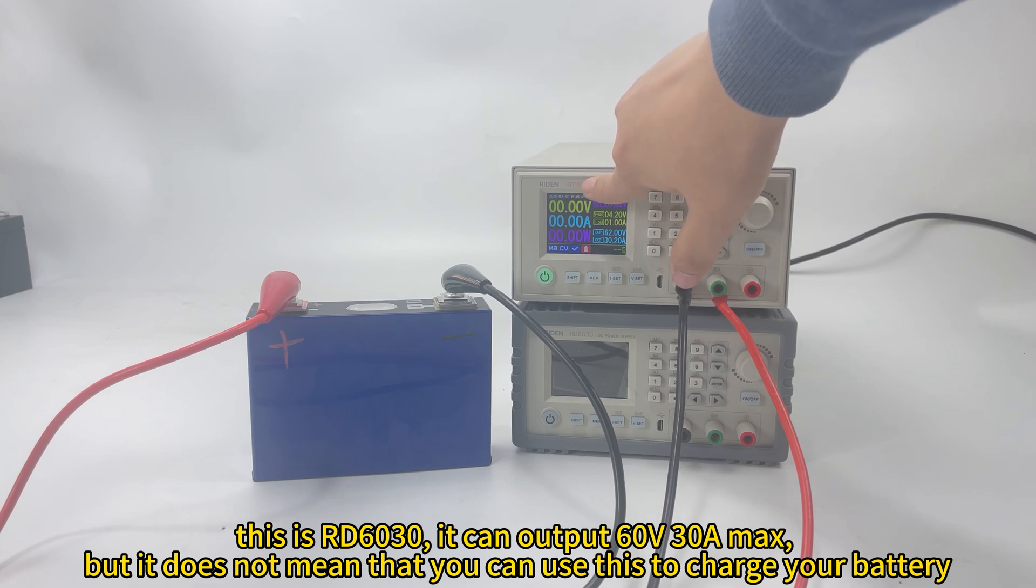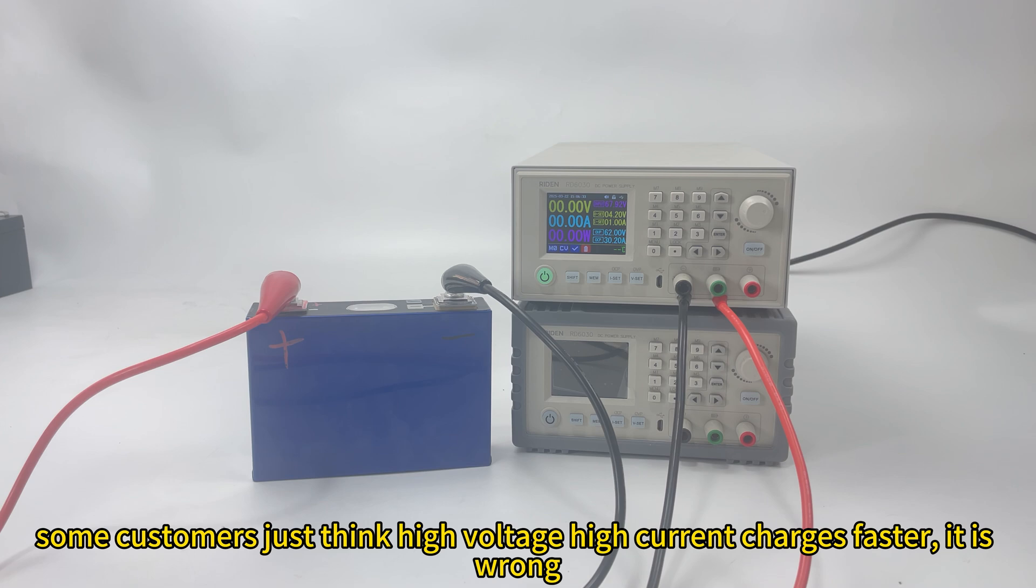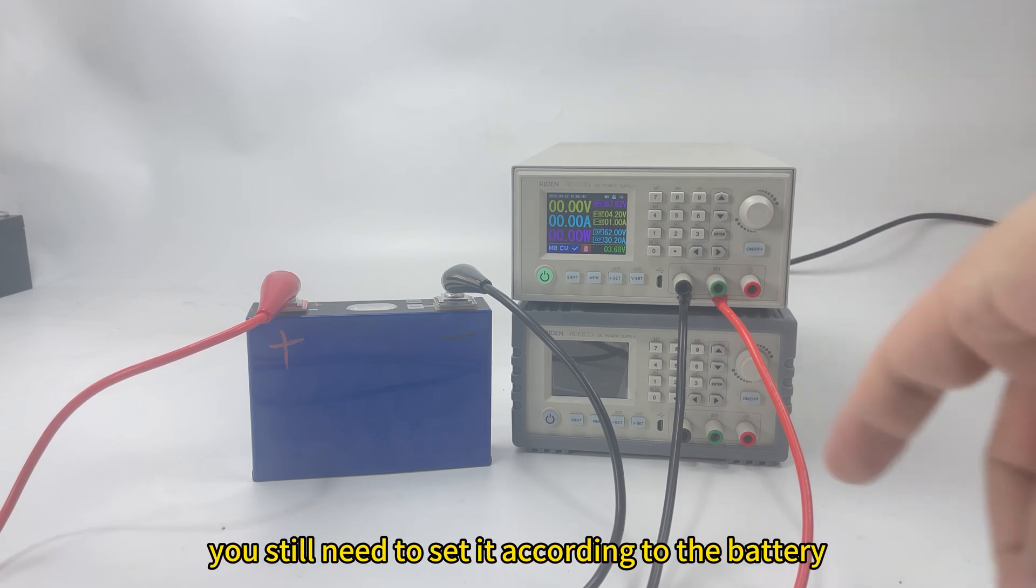Even though it can output 60 volt and 30 ampere max, we do not use this to charge the battery. Some customers will think that I just set high voltage and high current, the charging will be faster. It is wrong. You need to charge it according to the battery.